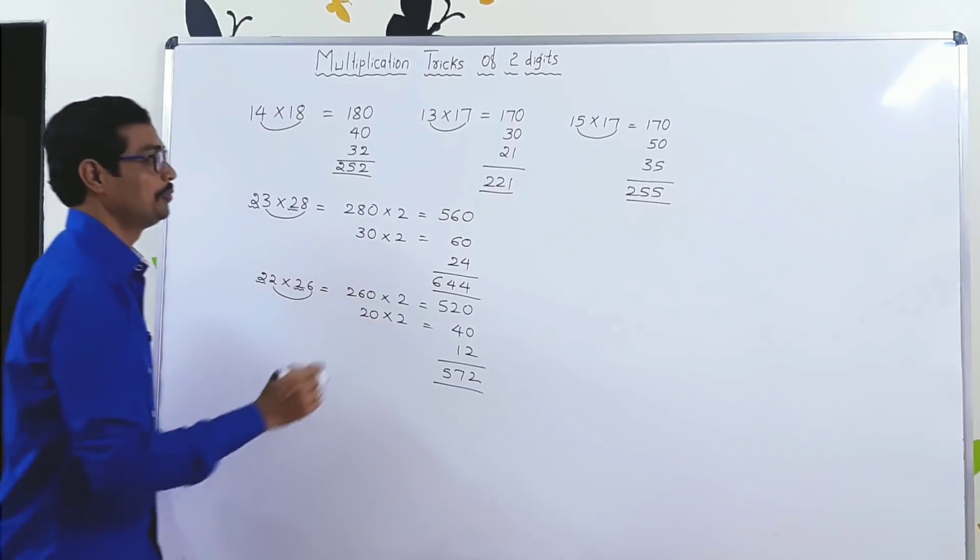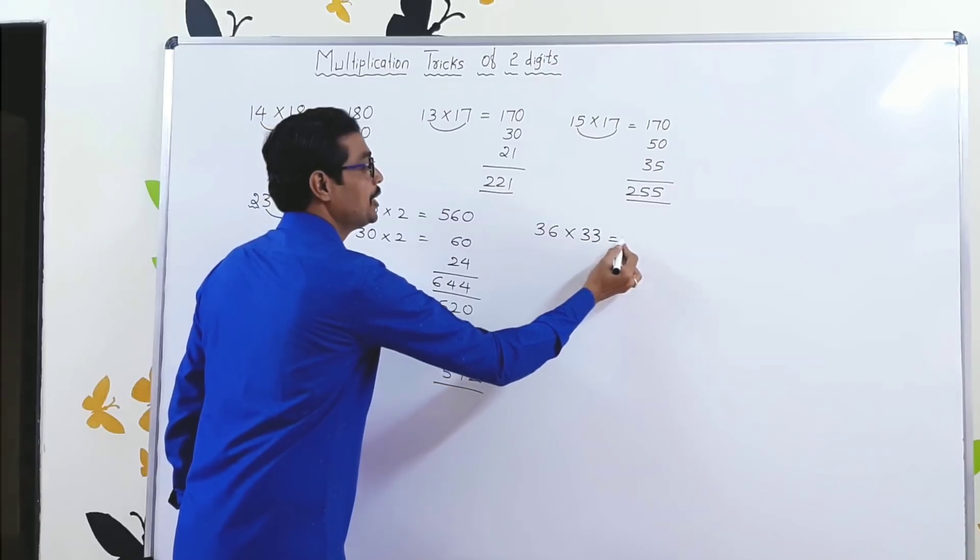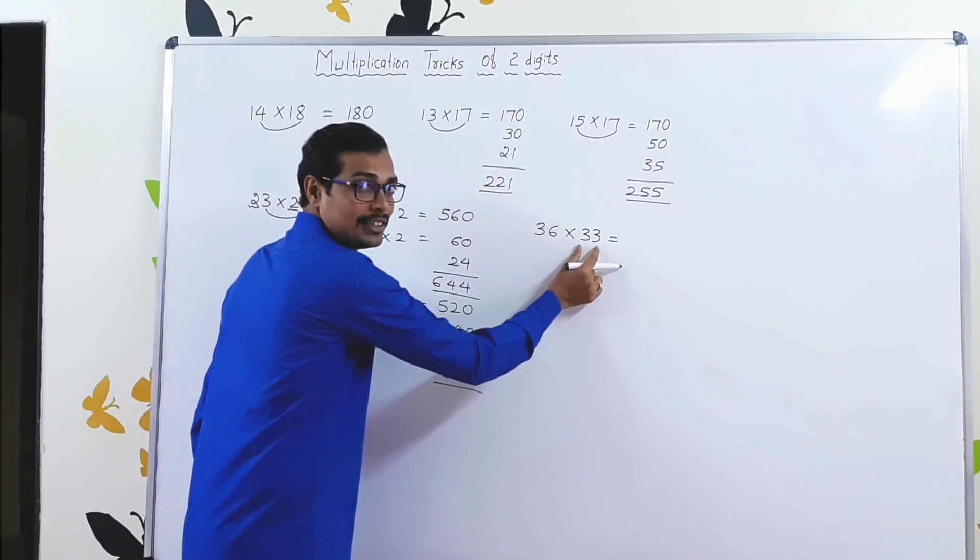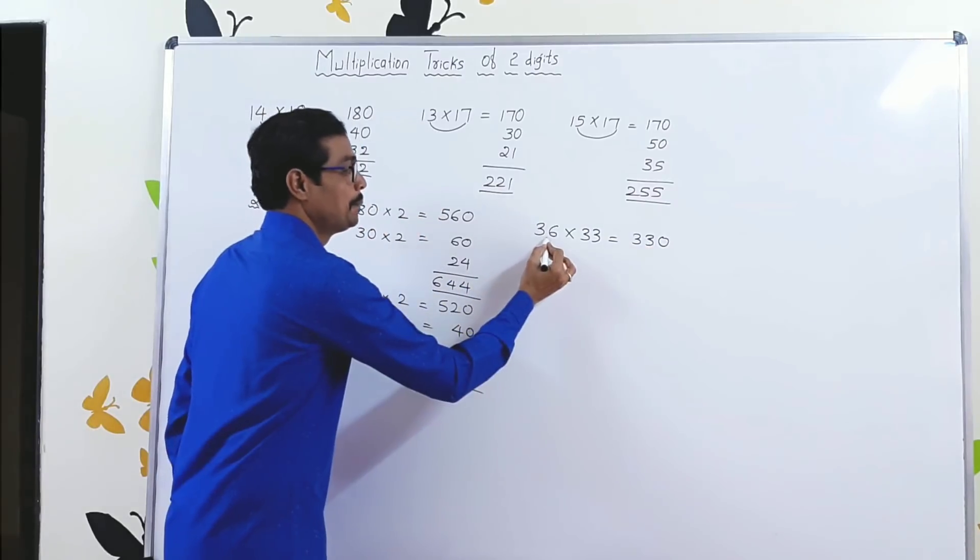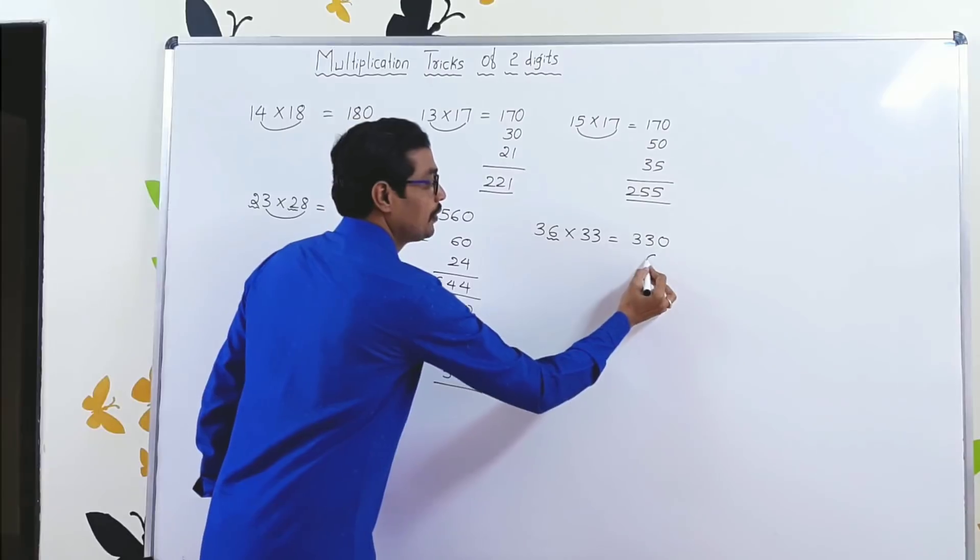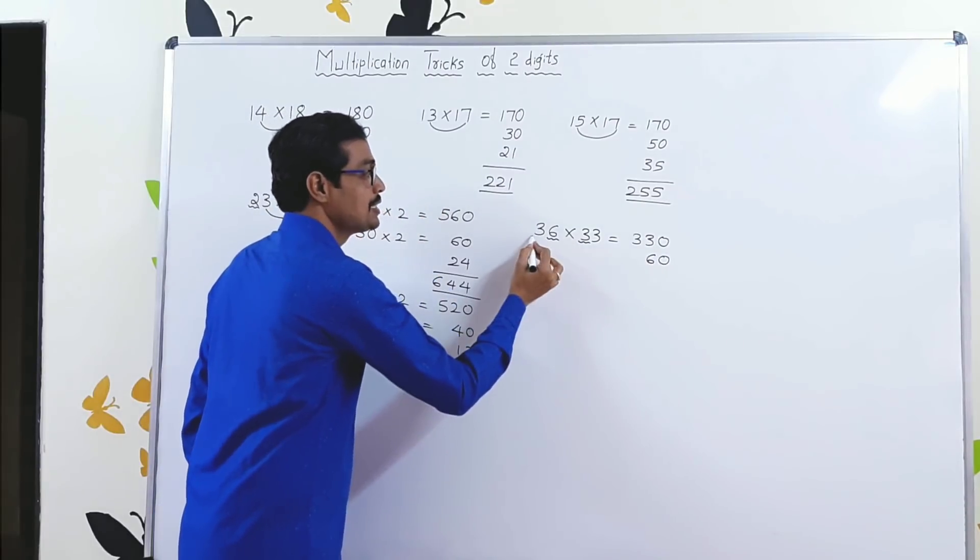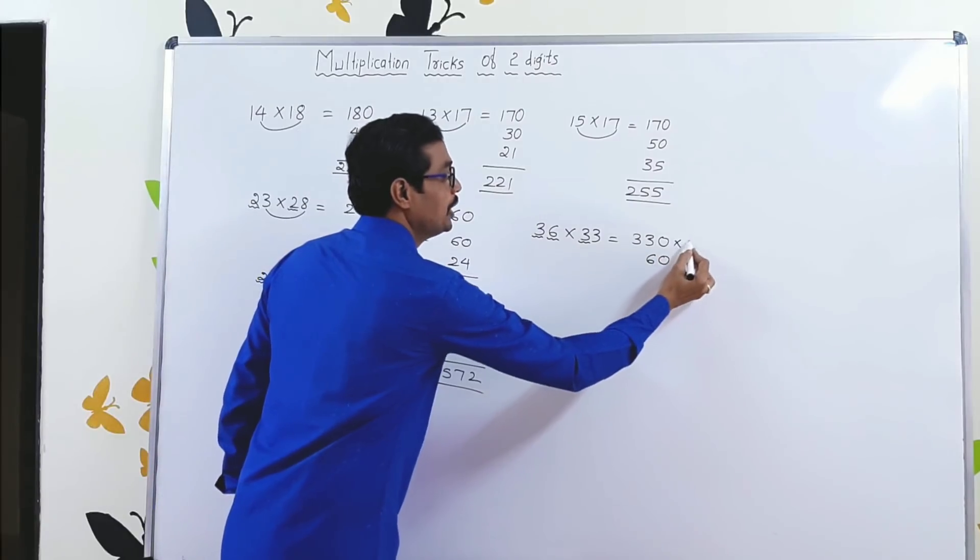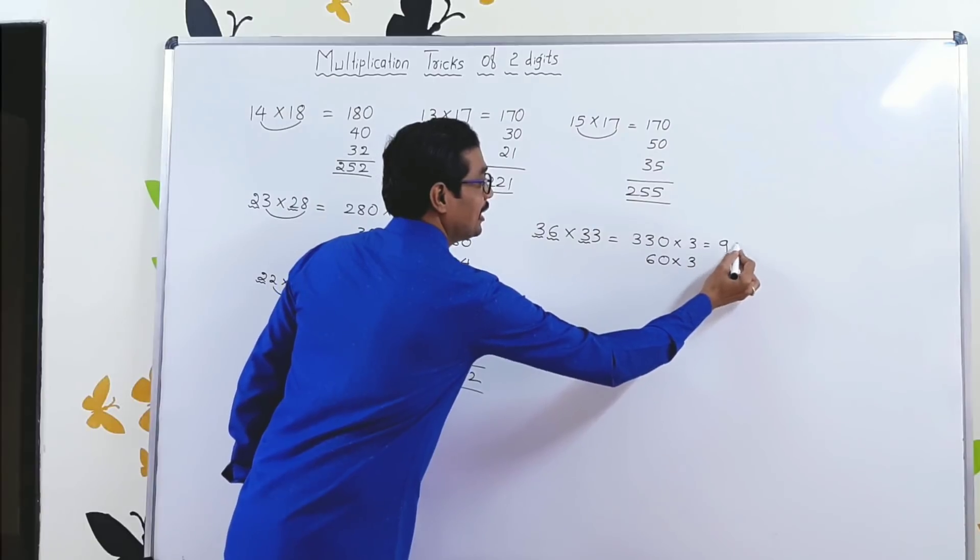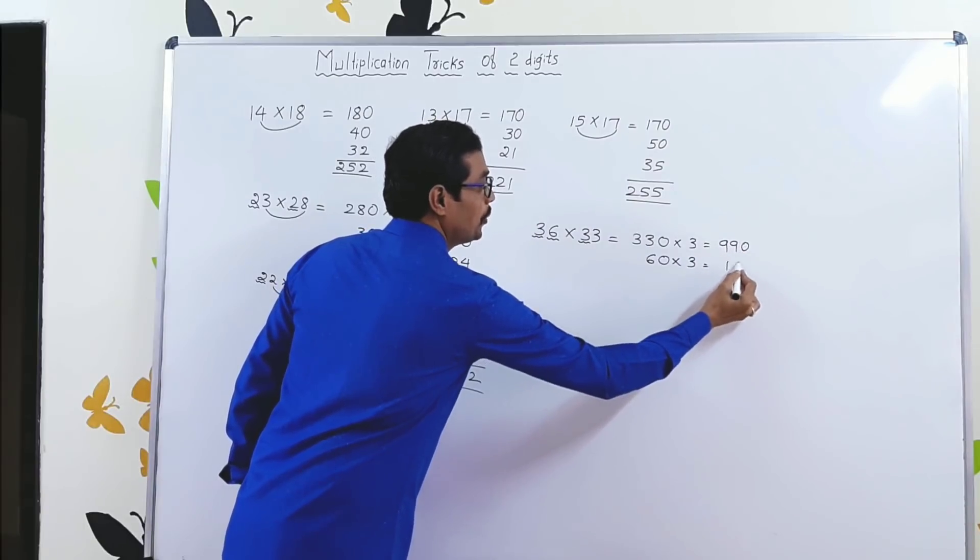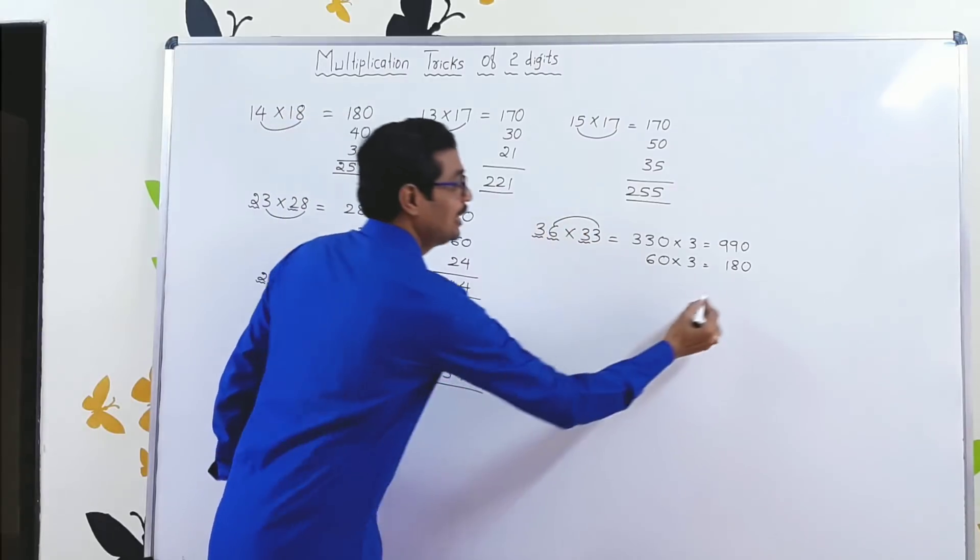We will try one more. 36 × 33. Very simple. 33, write it as 330. 6, 60. Now, in tens place, 3 is there. So we need to multiply by 3.